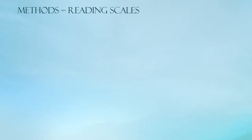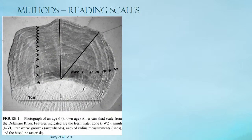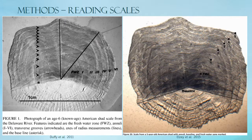Now that we have our scales and otoliths, they need to be aged — all structures must be aged multiple times by multiple readers. American shad age data has traditionally been taken using Canning's 1953 scale aging technique, in which the annuli were taken into account as well as the transverse grooves. While this method was widely used for over 50 years, doubts about validation study techniques were addressed, and current methods no longer take transverse grooves into account. Larger scales tend to have more grooves regardless of age, sex, or location. Scale aging is as much of an art as it is a science.